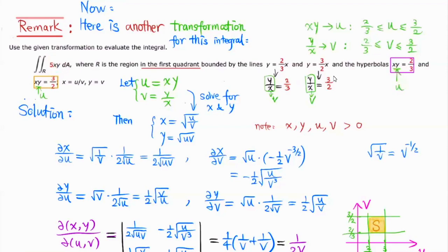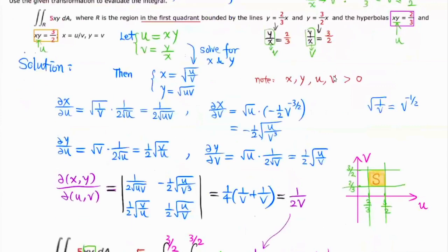So you look at the pattern of the region R, look at the boundary lines, and see if there's a pattern. If there is, and you also look at the function to integrate with to simplify it, then you let X times Y be U. You look at both the region and the function you integrate with to pick U and V.